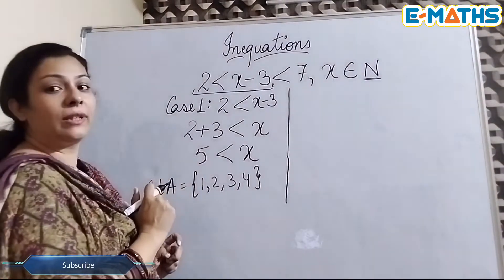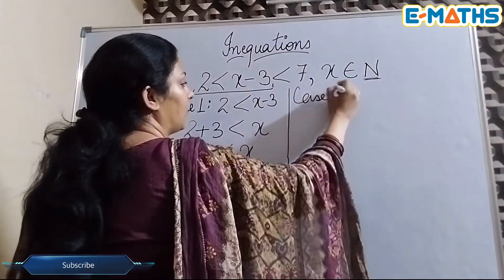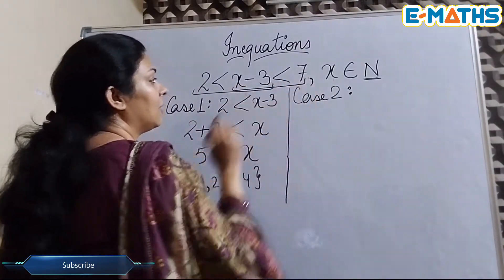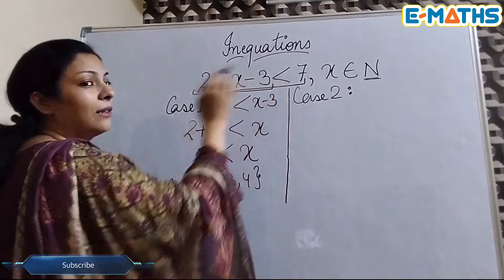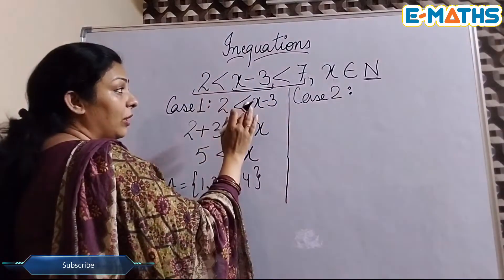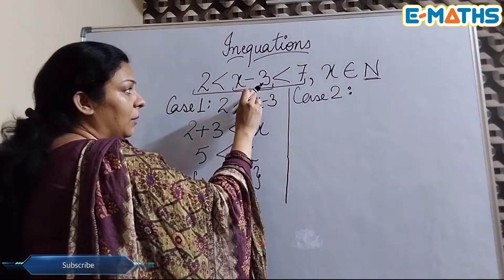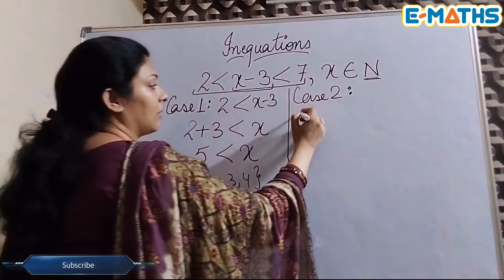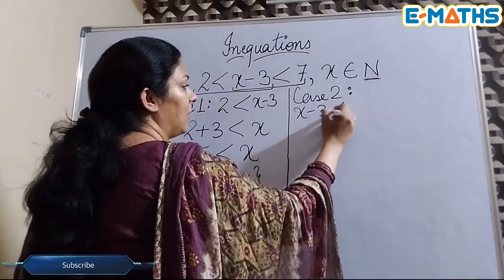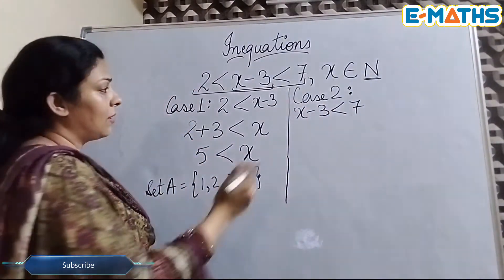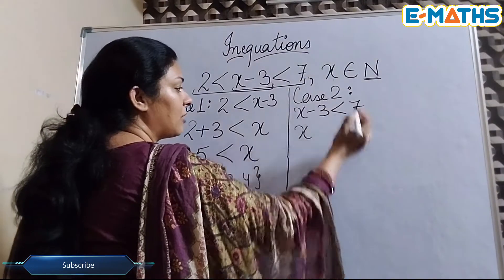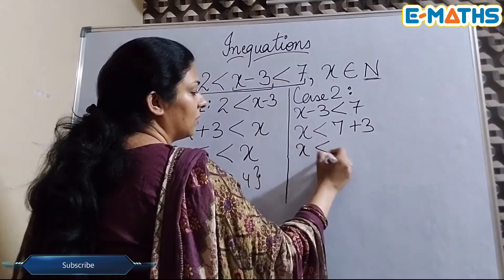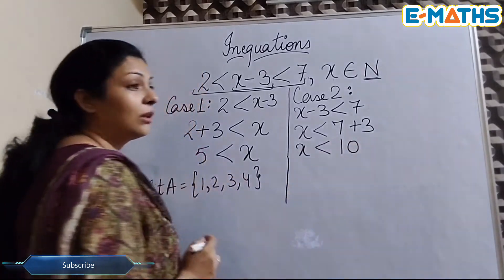Now I am going to solve case 2. For case 2 I will be taking the last two expressions, that means the center one and the last one. So here we can conclude that this center term is being taken in case 1 also and in case 2 also. Now let's start. x - 3 < 7. Again let's transpose this minus 3 on the other hand side without changing the sign of inequality. So x < 10.